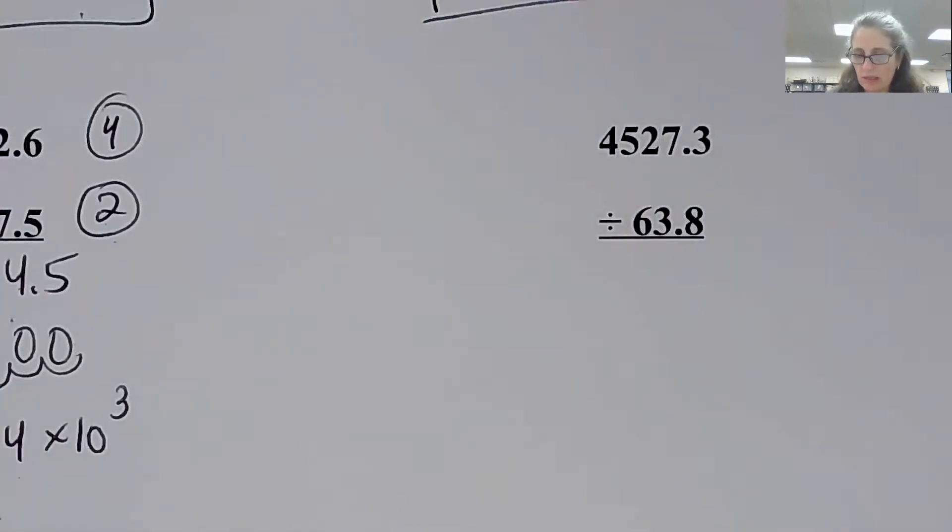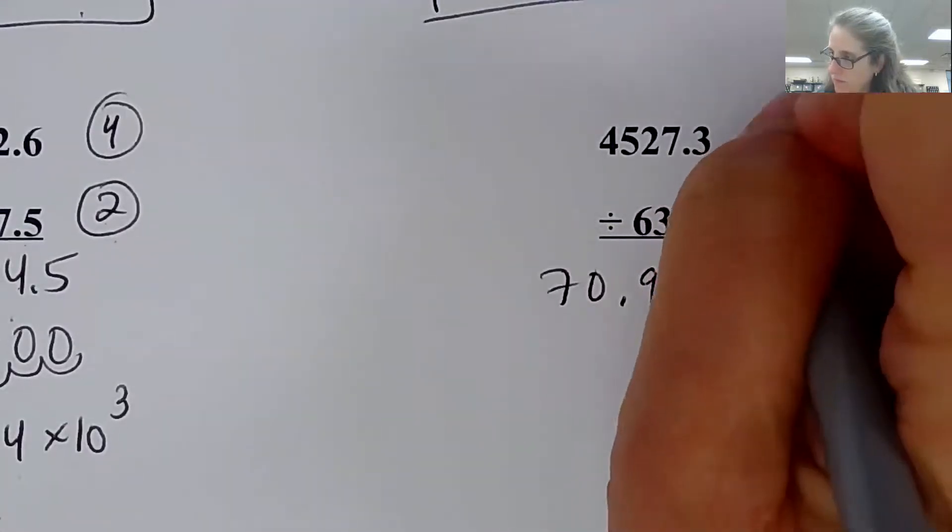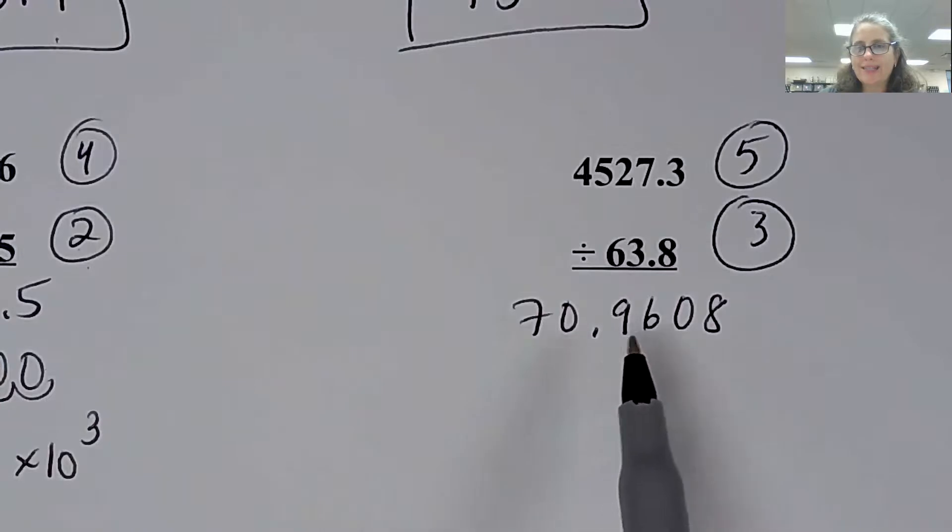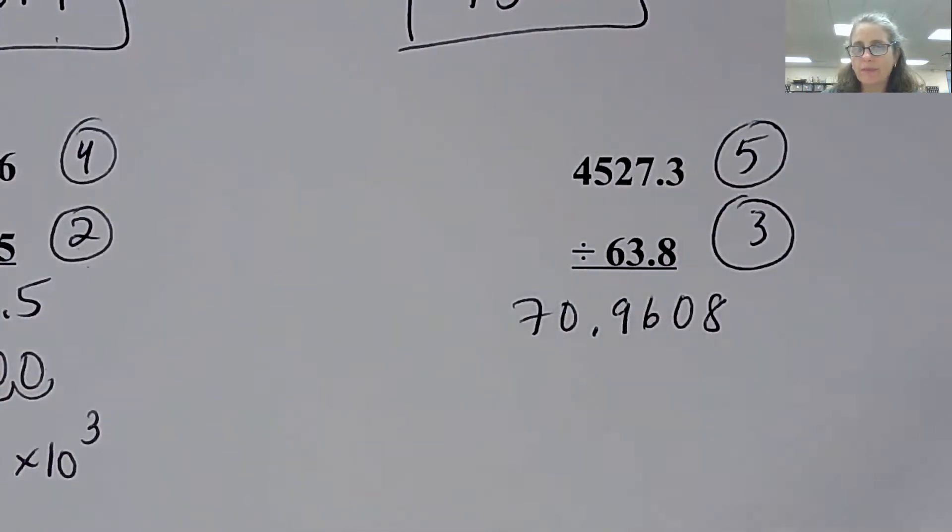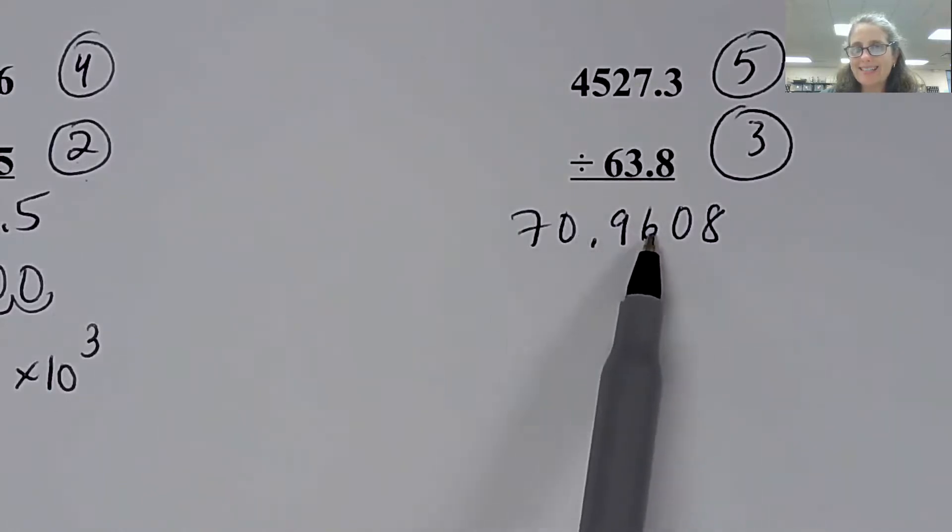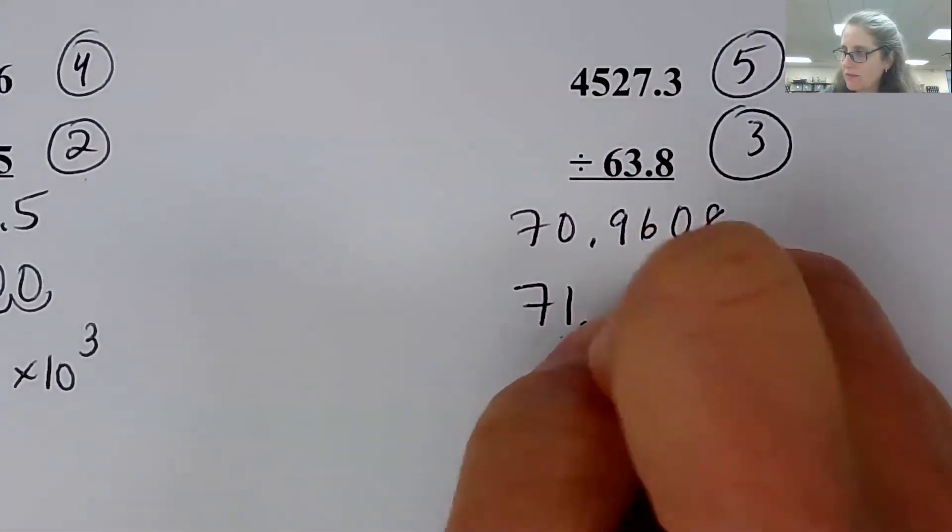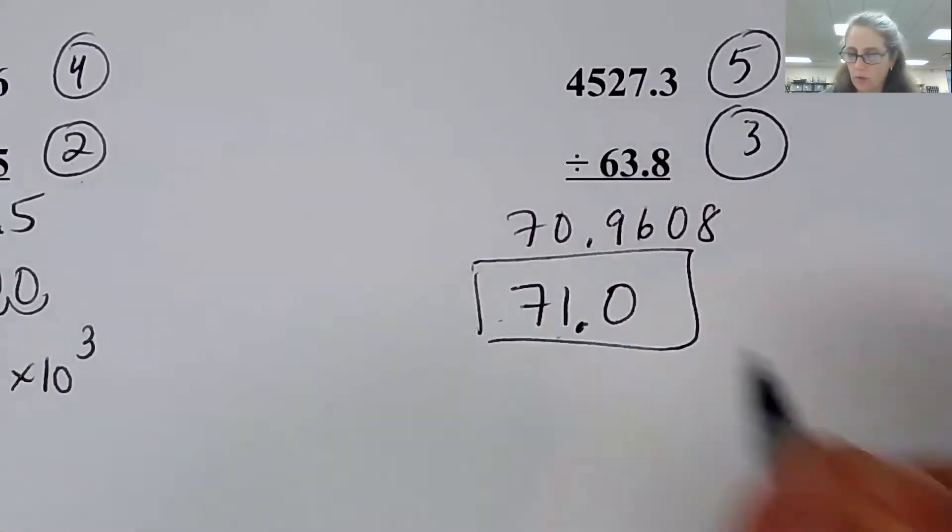So see if you could divide these two numbers and see if you can round it to the correct number of significant figures. So pause the video and see if you could do it. So you get 70.9608 in your calculator. This has five significant digits, this has only three, so my answer can only have three. But the reason I picked these numbers was it's 70.96. So I have to round this number up. So I want to round it up to 71. But I can't stop there because that's only two sig figs. So I need to put a zero at the end to say I have three significant digits. Because this is the Pacific side, I start counting and I don't stop counting until I'm done. So this is the correct answer for this particular problem.